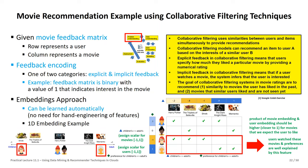With this, you get a recommendation much more accurate than association rule mining would provide — where a general tendency might say 'everyone who watched Shrek also watched The Dark Knight Rises,' which is clearly not the case. We need a smart algorithm here, and the idea of collaborative filtering becomes clear: we really need to get the similarity of both users and movies right.